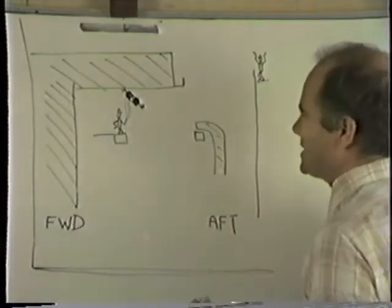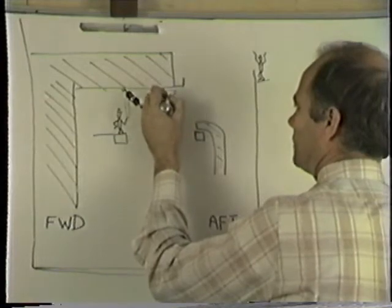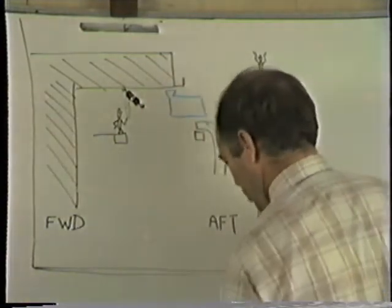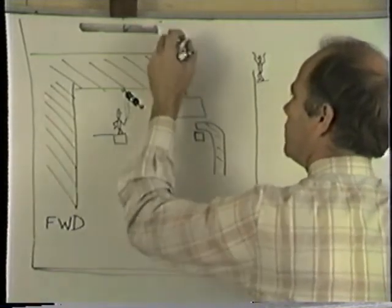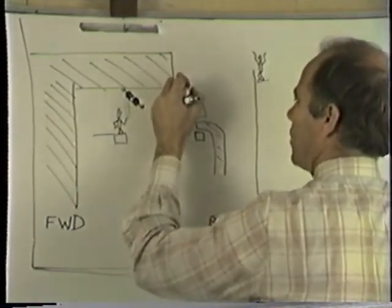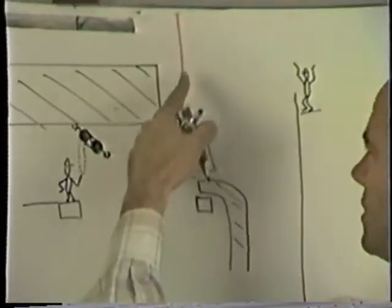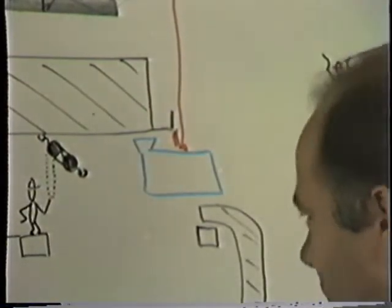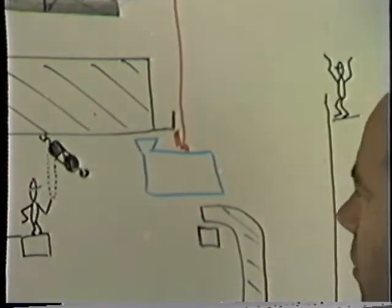And what we did was we brought the generator in to about here and hung it off two wires over here while the crane lengthened the wire that it brought it in on to eight meters so that it wouldn't catch the hook anywhere in the engine room as it moved. Then we took a wire from here to here and dragged the whole generator across.